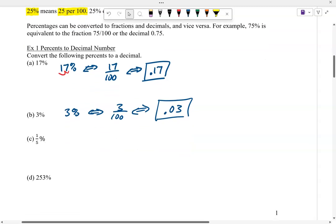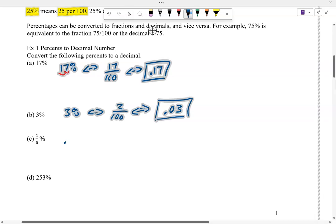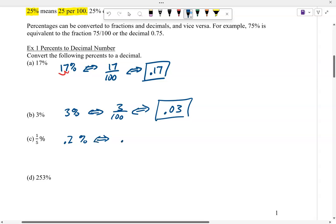3% means 3 one hundredths or 0.03. One-fifth percent - you punch that in and get 1 divided by 5 is 0.2. So this is like 0.2 per cent per hundred. If you divide that 0.2, it's going to move that to the left two, and you end up getting 0.002.